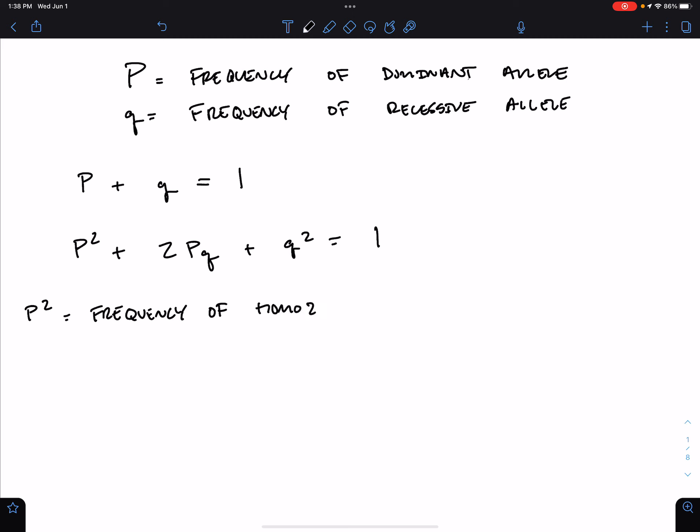Where P squared equals the frequency of homozygous dominant individuals in the population, 2PQ equals the frequency of heterozygous, and Q squared is equal to the frequency of homozygous recessive.